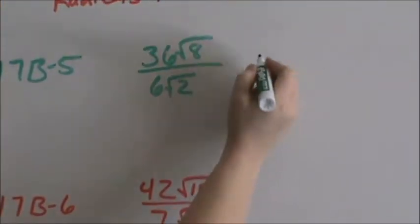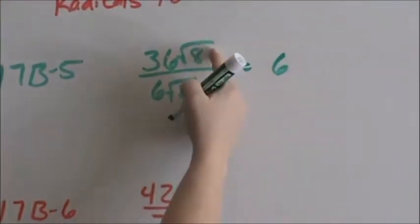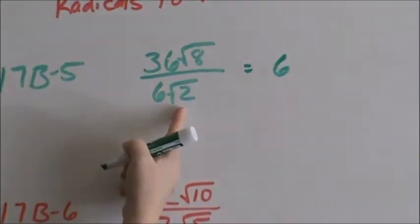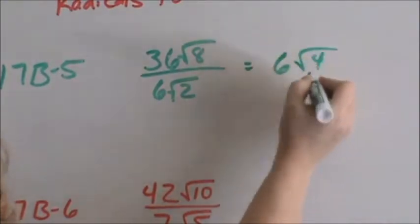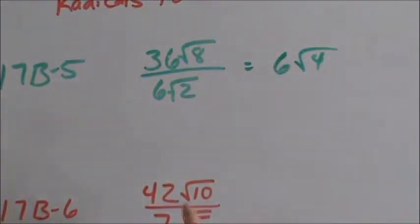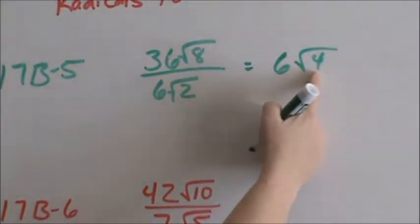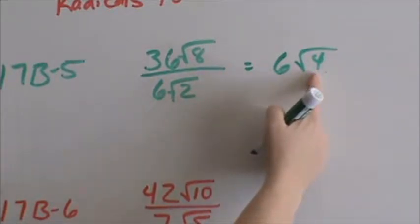36 divided by 6 is 6. Square root of 8 divided by square root of 2. 8 divided by 2 is 4. So square root of 4. The one thing to watch for is square root of 4 equals 2.